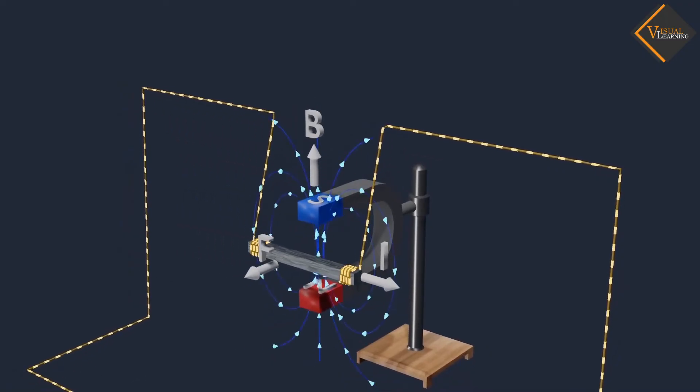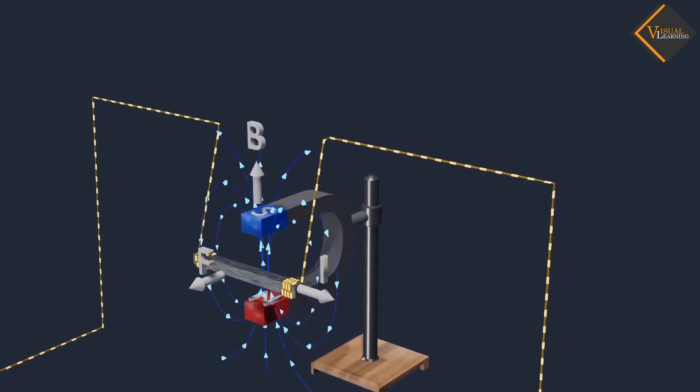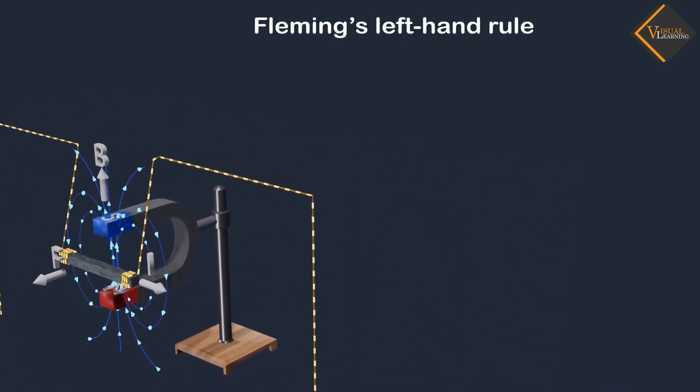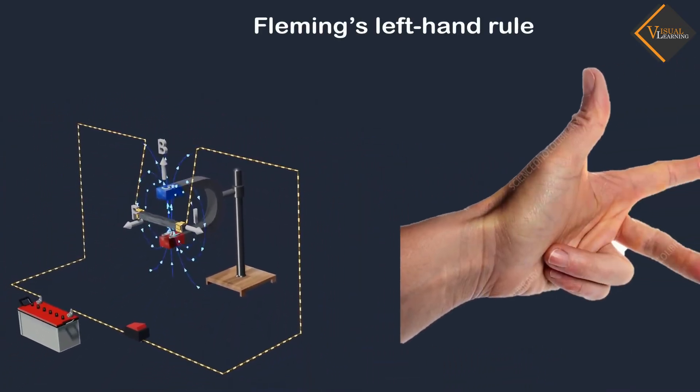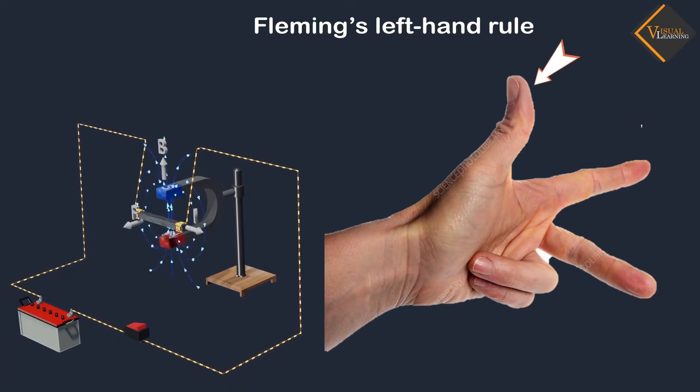This can be illustrated through a simple rule called Fleming's left-hand rule. According to this rule, stretch the thumb, forefinger, and middle finger of your left hand such that they are mutually perpendicular.